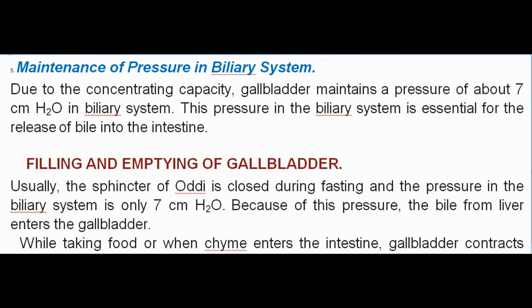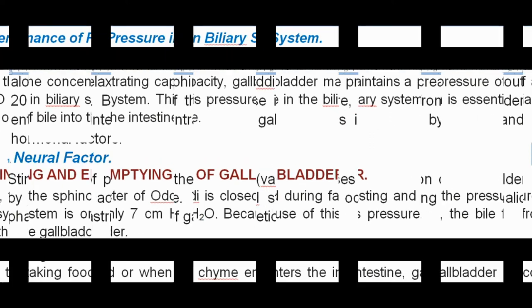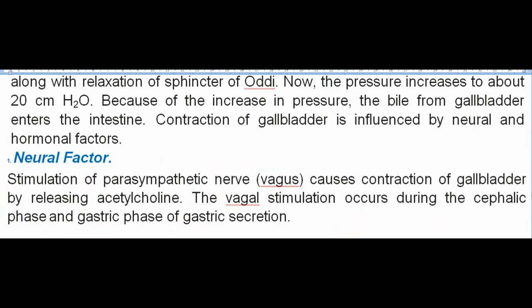During fasting, the sphincter of Oddi is closed and the pressure in the biliary system is only 7 cm H₂O, so bile from the liver enters the gallbladder. While taking food or when chyme enters the intestine, the gallbladder contracts along with relaxation of the sphincter of Oddi. The pressure increases to about 20 cm H₂O, causing bile from the gallbladder to enter the intestine. Contraction of the gallbladder is influenced by neural and hormonal factors.